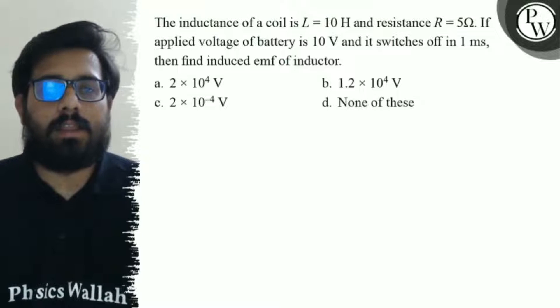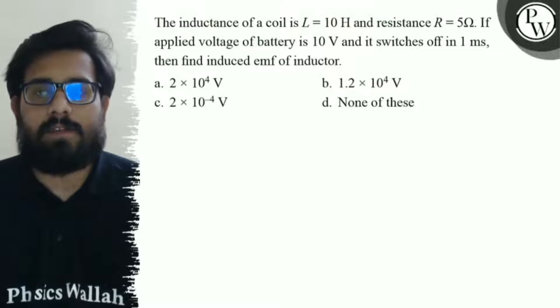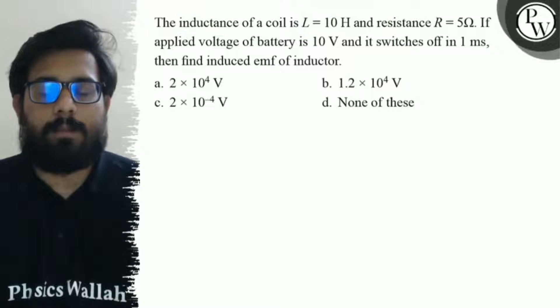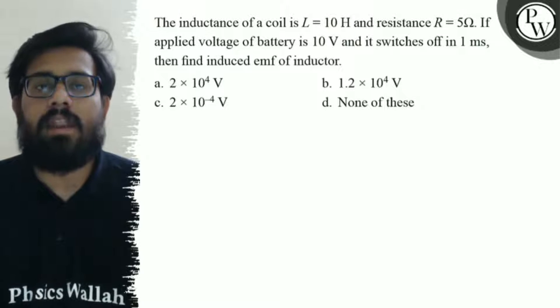Hello, let's see the question. The inductance of a coil is 10 henry and the resistance is 5 ohm. If applied voltage of the battery is 10 volt and it switches off in 1 millisecond, then find induced emf of inductor.